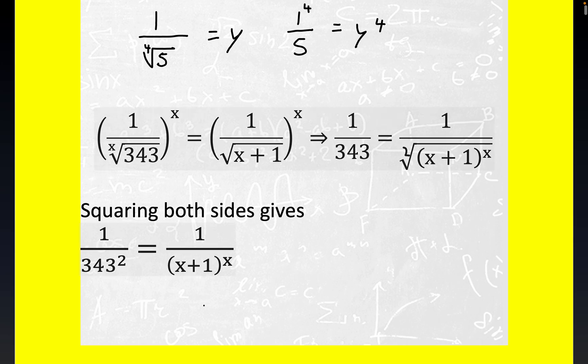Now notice that this piece right here is the same as 1 over 7 to the sixth power. And that follows from the fact that 7 cubed is 343, folks. 7 cubed is equal to 343. So we can equate this right-hand side with 1 over 7 to the sixth power.